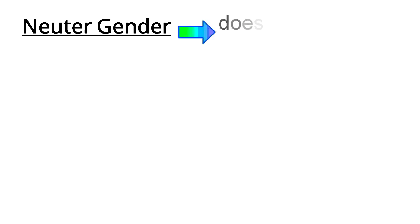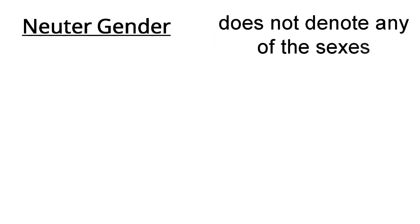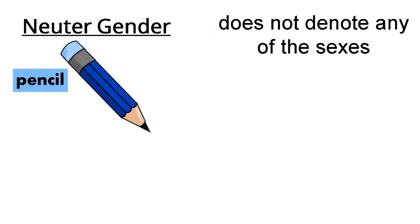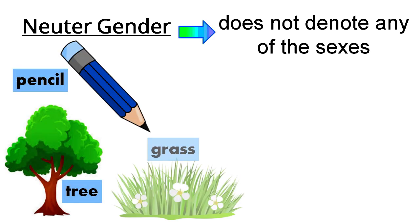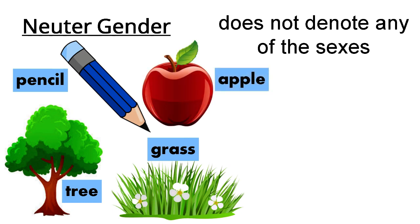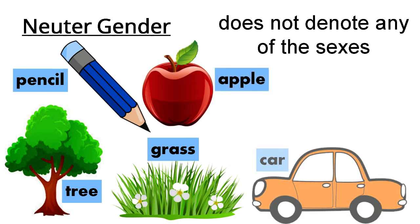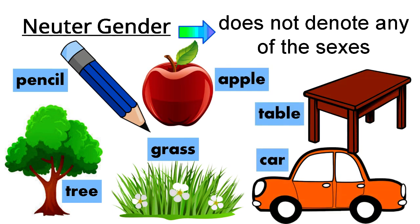And the neuter gender does not denote any of the sexes. Examples: pencil, tree, grass, apple, car, and table.